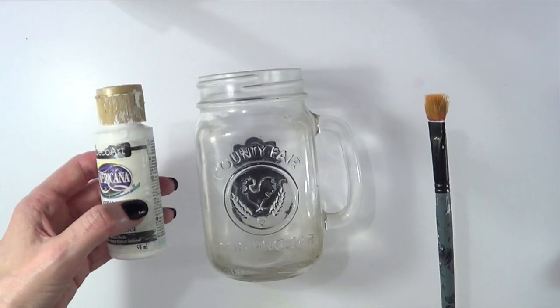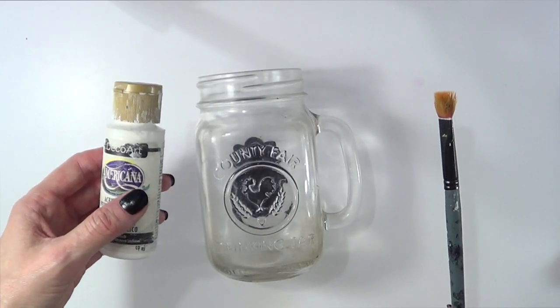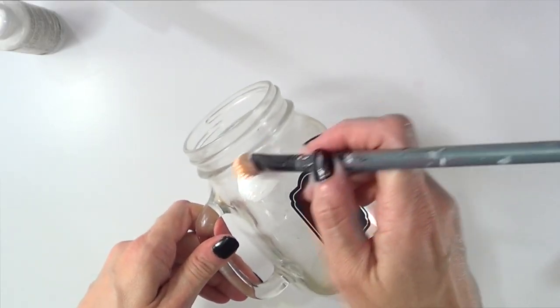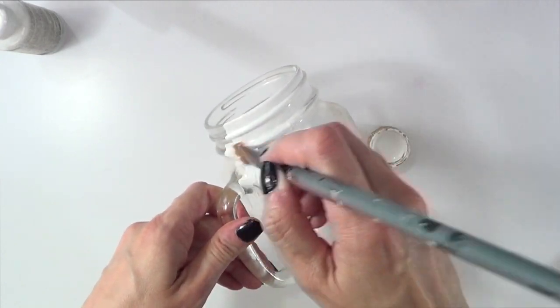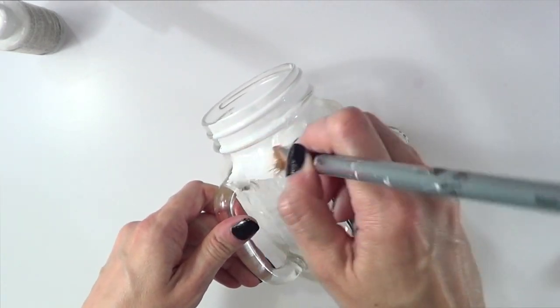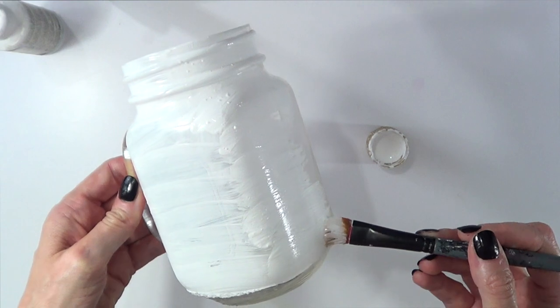So I thought of creating this, and for that I'm going to be using white acrylic paint and a brush. I'm just going to cover the whole thing to make the colors I'm using on top pop a lot more, because I'm painting this as a watermelon, giving it two coats.